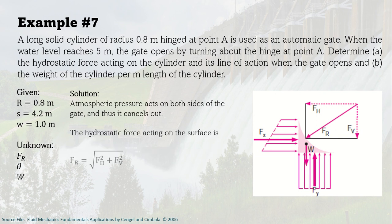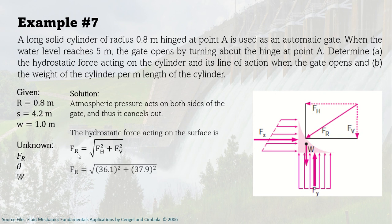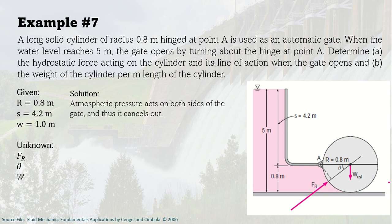Now that we have Fv = 37.9 kN and Fh = 36.1 kN, we use the Pythagorean theorem to get FR, which is just the hypotenuse of Fv and Fh. Thus FR = 52.3 kN. So the hydrostatic force acting on this cylinder is 52.3 kN. For the second unknown — the line of action angle theta with respect to the horizontal — we can obtain it by drawing the triangle of forces.